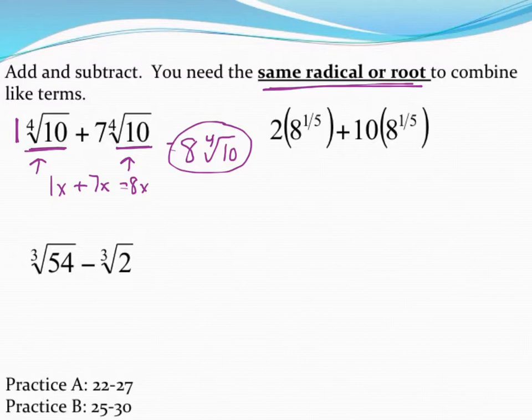Our next example has 2 times 8 raised to the 1/5 plus 10 times 8 raised to the 1/5. Notice again, they have the same thing sort of as your variable. They have the same piece at the end there, so adding up like terms, if I have 2 of them and then I add 10 of them to that, I've got 12 total. That piece at the end that's in common will not change. It's still 8 raised to the 1/5 power, but now I have 12 of them in front.